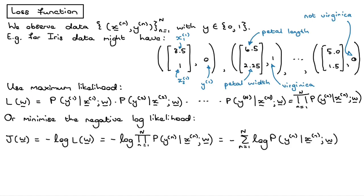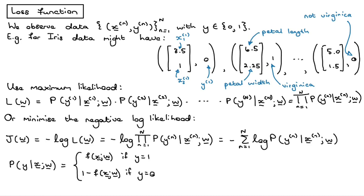Instead of maximizing the likelihood function, we can minimize the negative log likelihood. We take the negative of the log of the likelihood L. The nice thing is we have the log of a product, which becomes a summation, so we have minus the sum over all training points of the log of p(y_n | x_n, w). We've still not put in the actual prediction function, and that's what we're going to do now.